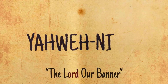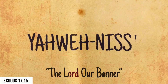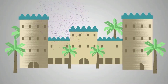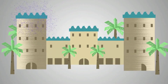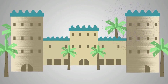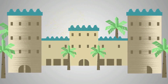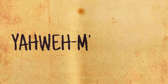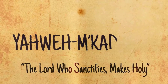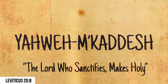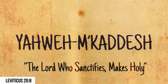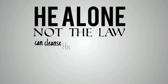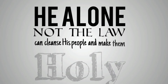Yahweh Nisi — The Lord our banner, where banner is understood to be a rallying place. This name commemorates the desert victory over the Amalekites in Exodus 17. Yahweh Mekedesh — The Lord who sanctifies, makes holy. God makes it clear that he alone, not the law, can cleanse his people and make them holy.